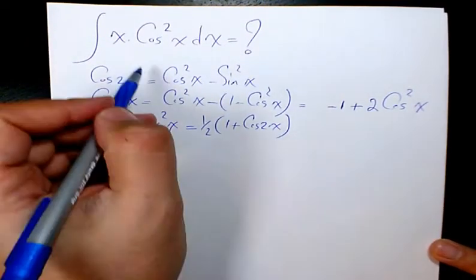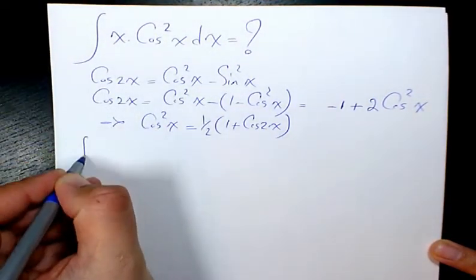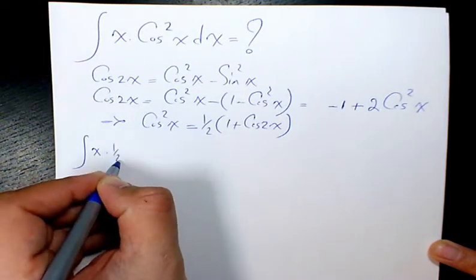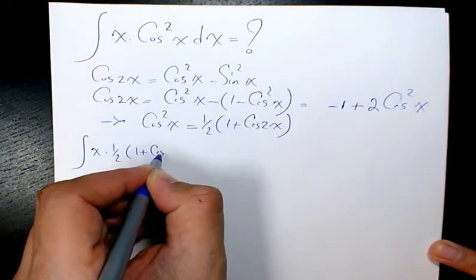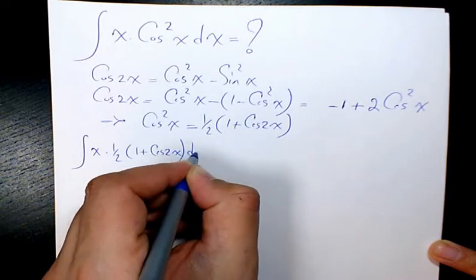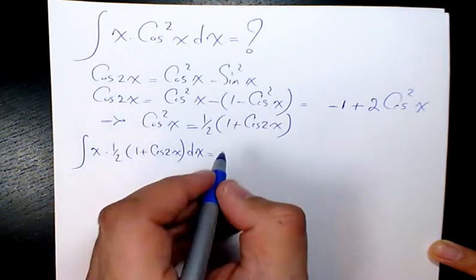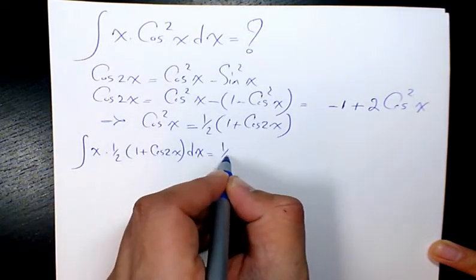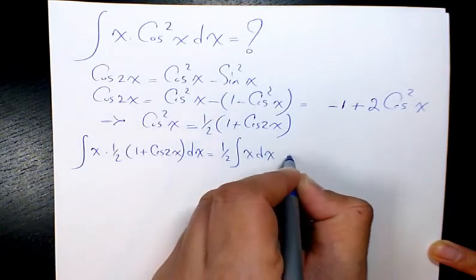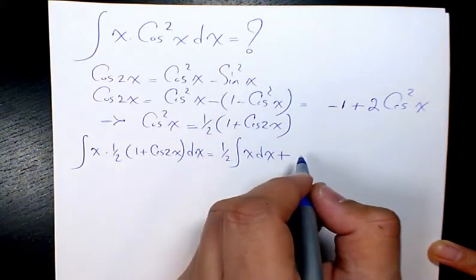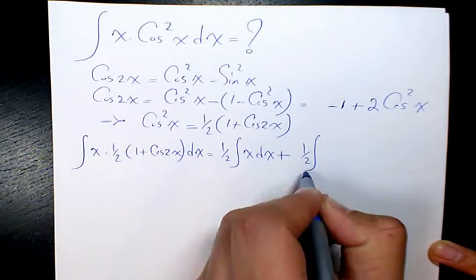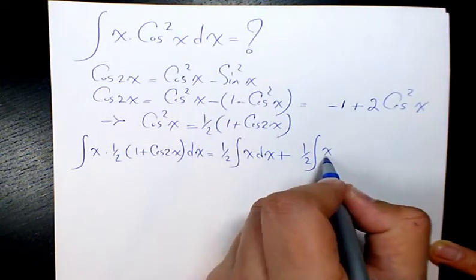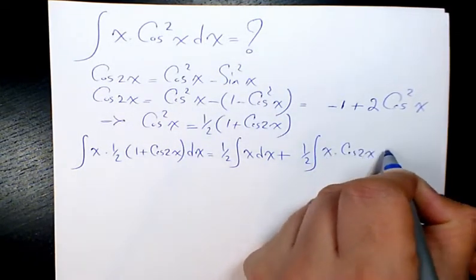So now I'm going to substitute it in the equation. So I have x times 1 over 2 times 1 plus cosine 2x dx. Then I will have 1 over 2 x dx plus 1 over 2 x times cosine 2x dx.